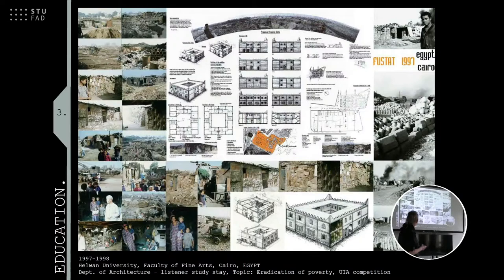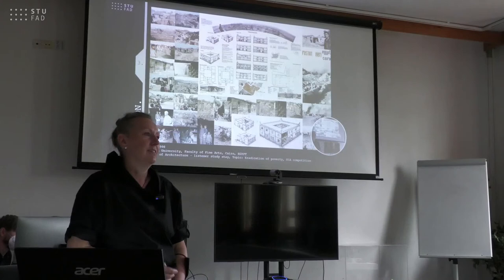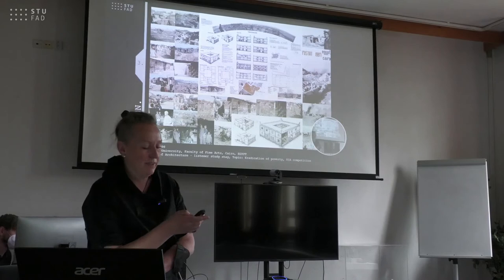After graduating I went to Egypt, and this was my first time being interested in the social aspects of architecture, because I encountered slum-like living conditions. At university we had a chance to join the UIA competition called 'Eradication of Poverty.' I found a place near the Coptic town in Cairo where people live on a dump and burn waste to produce ceramics.